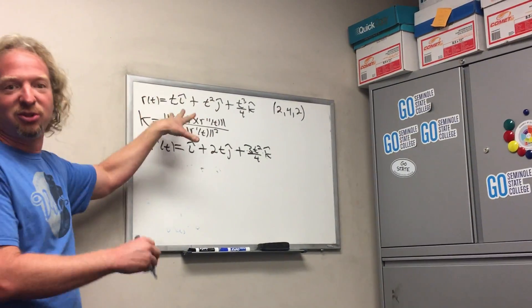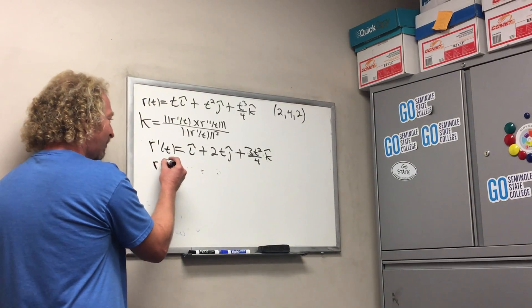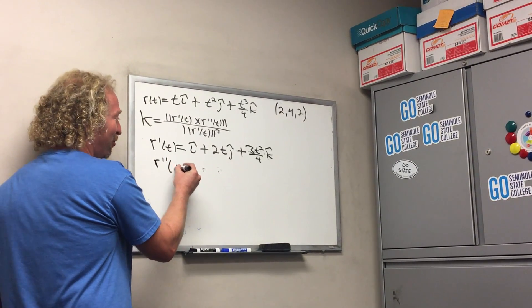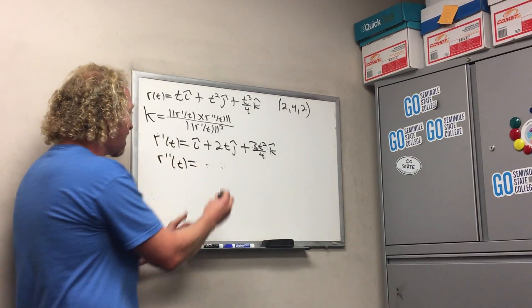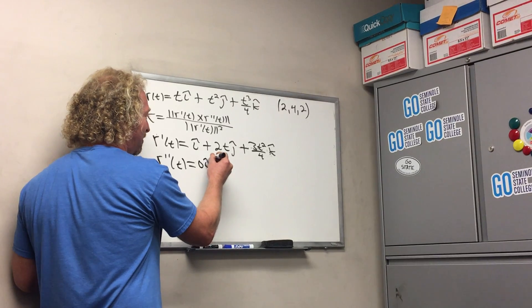Then we need the derivative again to use this formula to find curvature. R double prime. What's the derivative of 1 i hat? Zero. Yeah, zero. I'll put zero i hat, that's what people do, or I do.